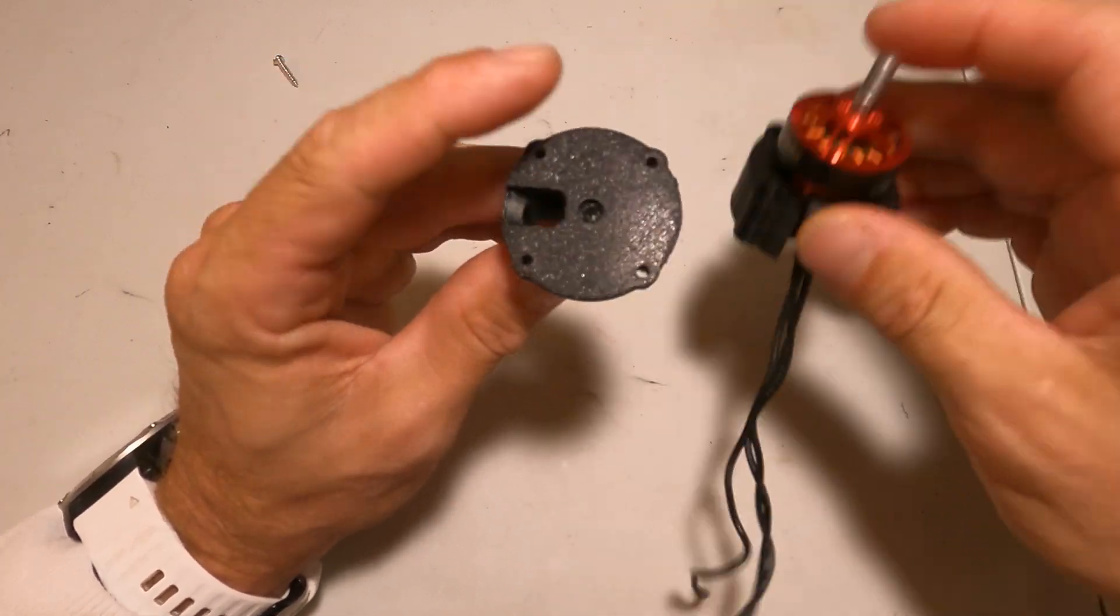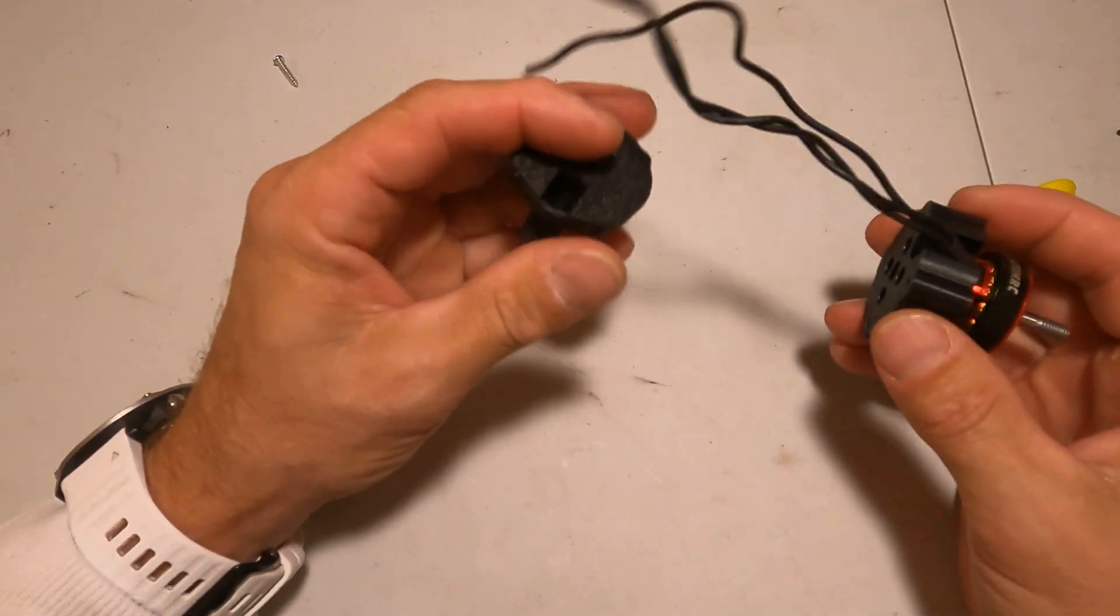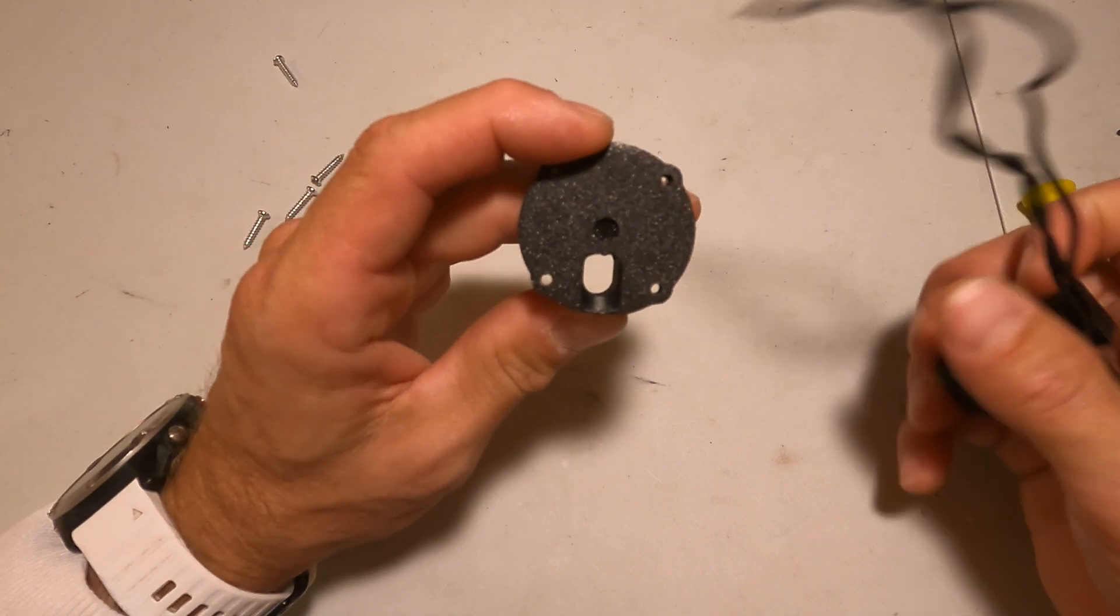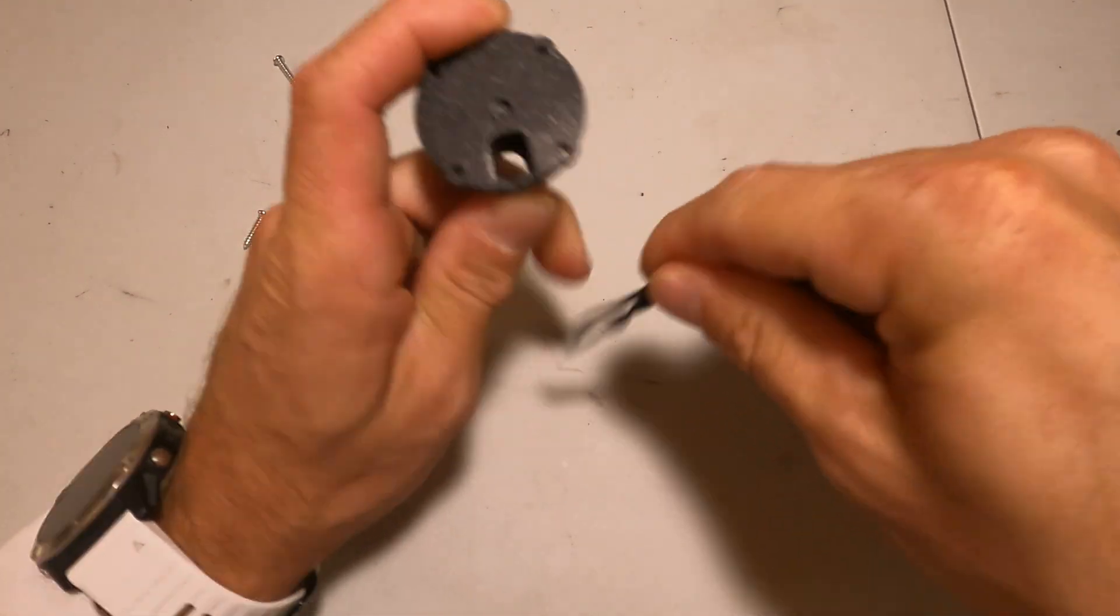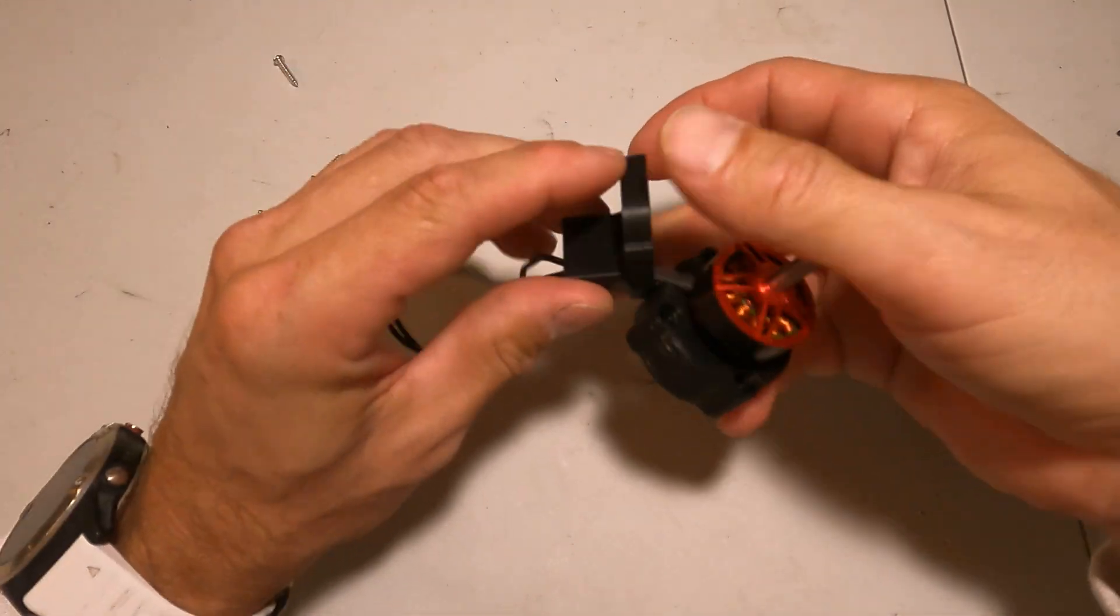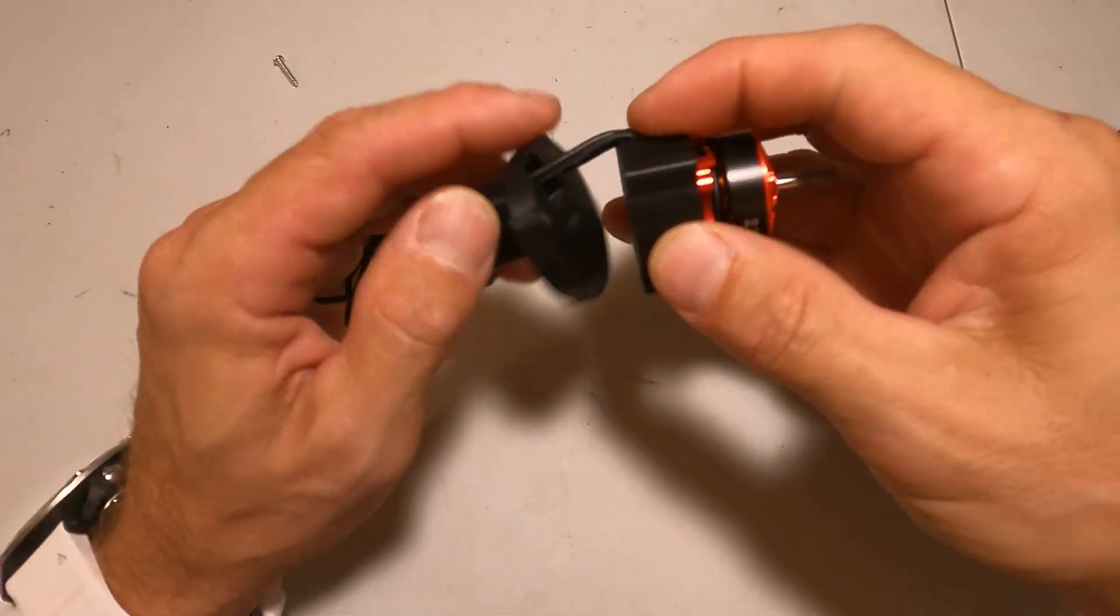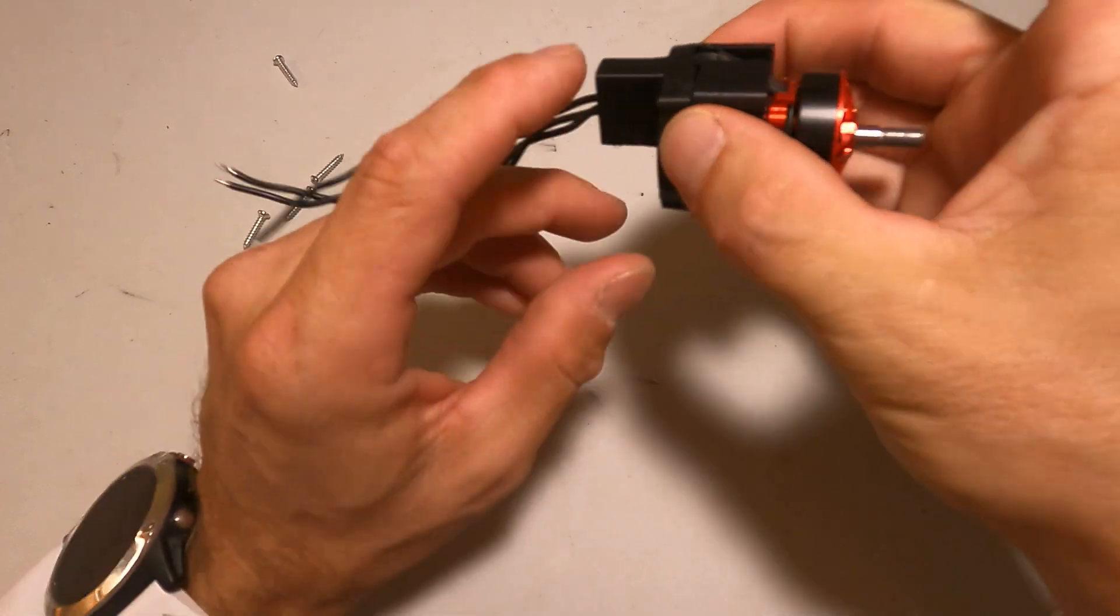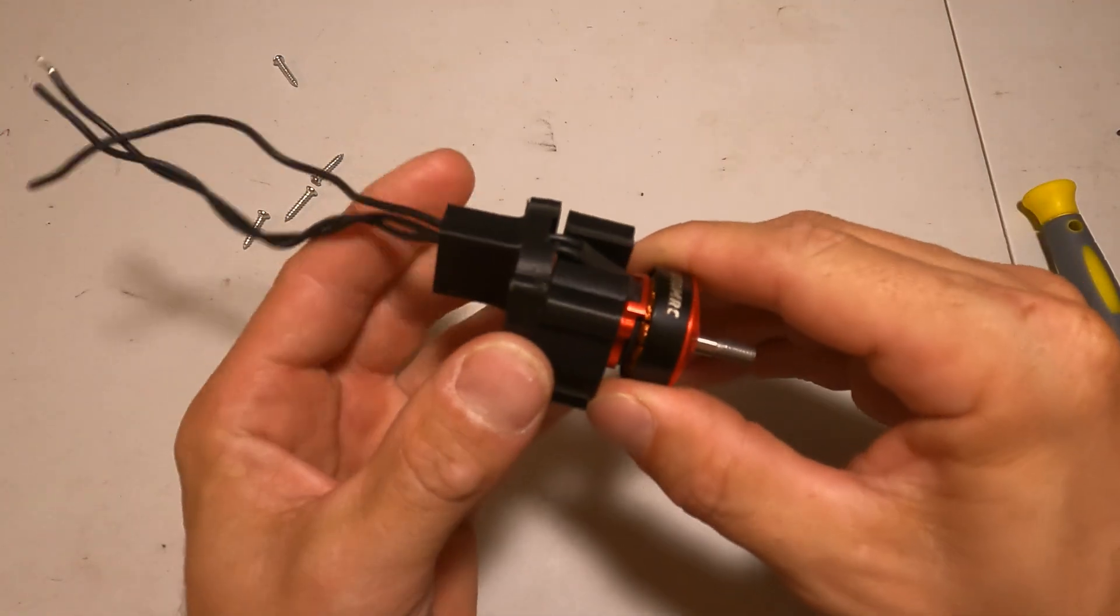So then this piece is mounted on the aircraft, and what you would do is you would take your wiring from your motor, you would feed it through, and then it would come underneath like so. And then there you go.